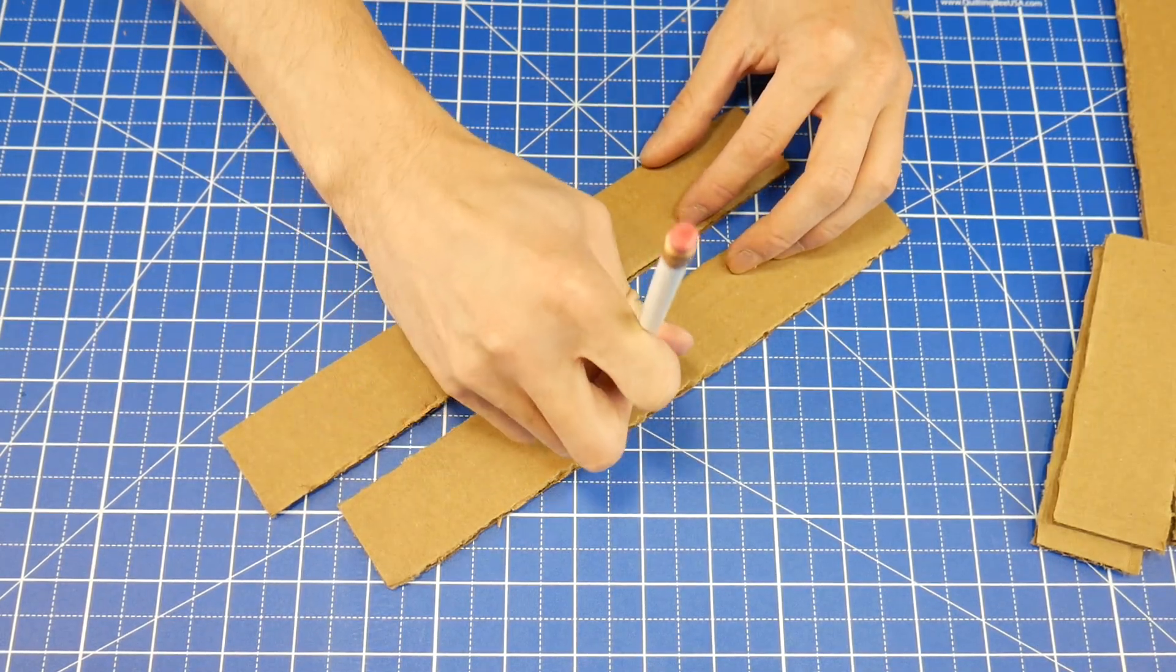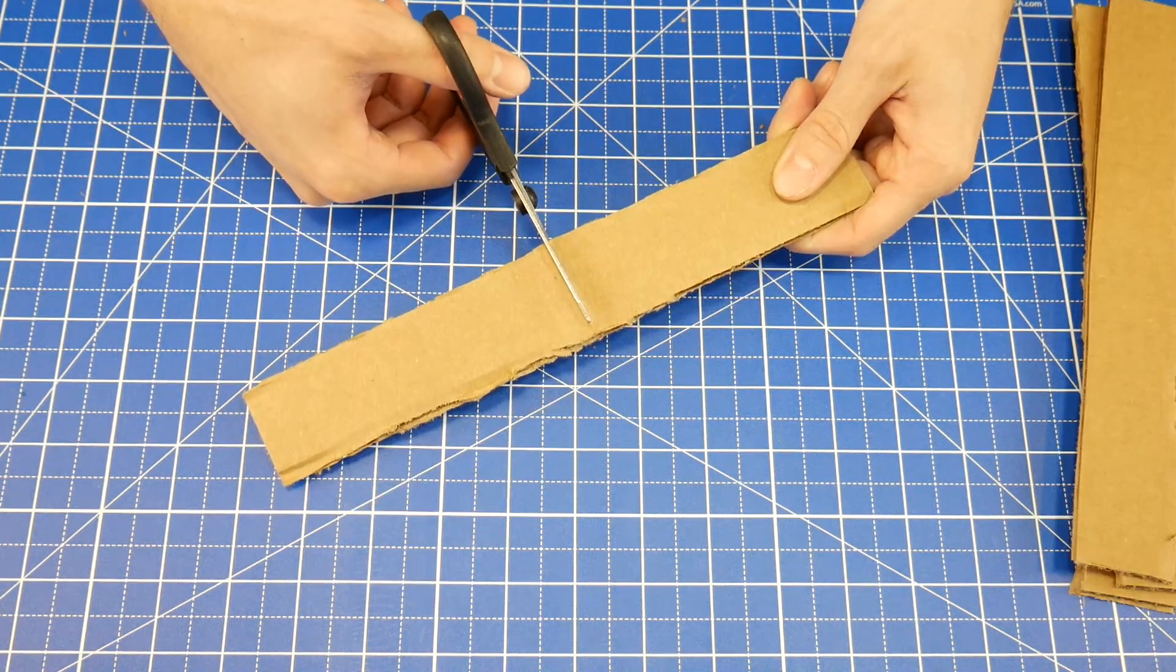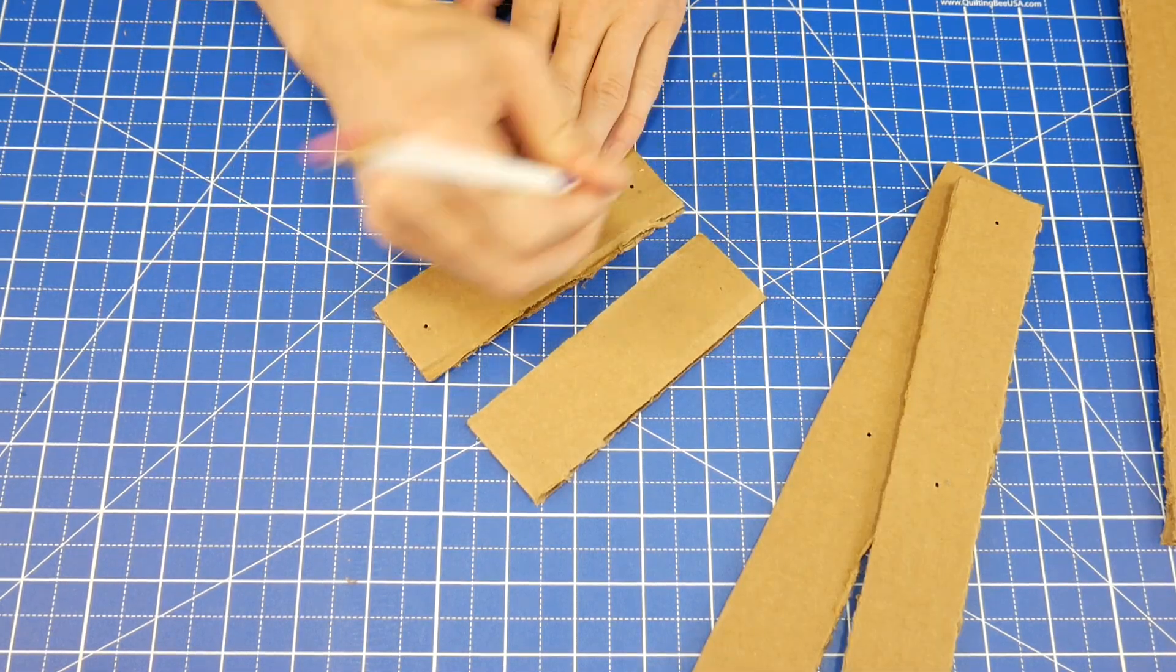Poke a hole in the center and near one of the ends of two of the 10 inch strips. Next, cut one of those pieces in half, and poke holes near the ends of these 5 inch pieces.